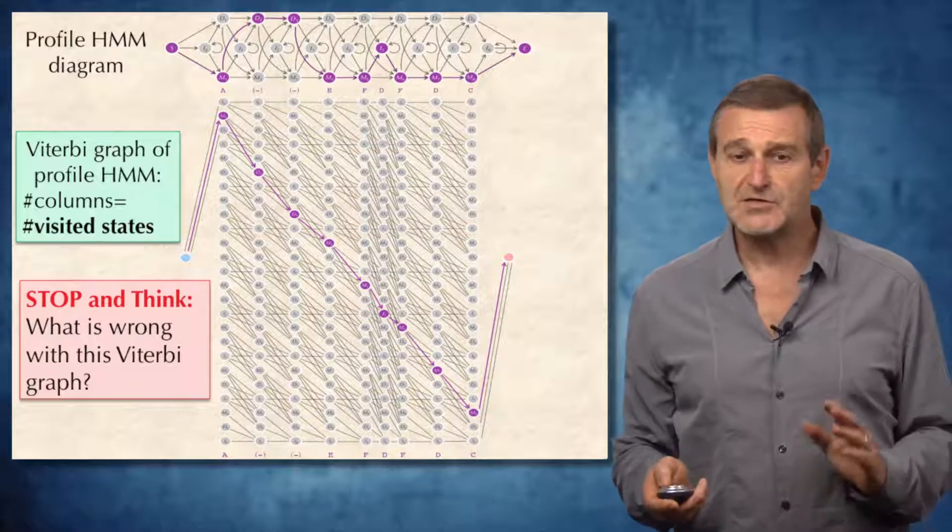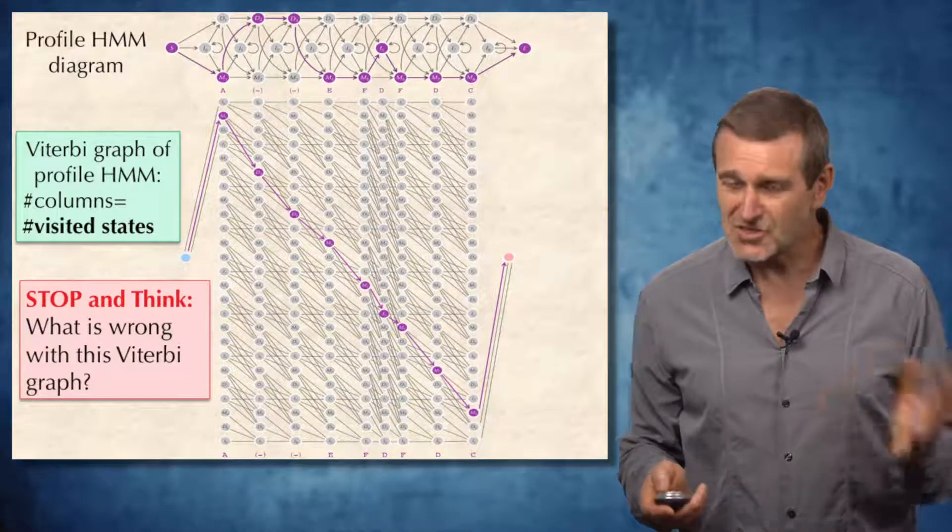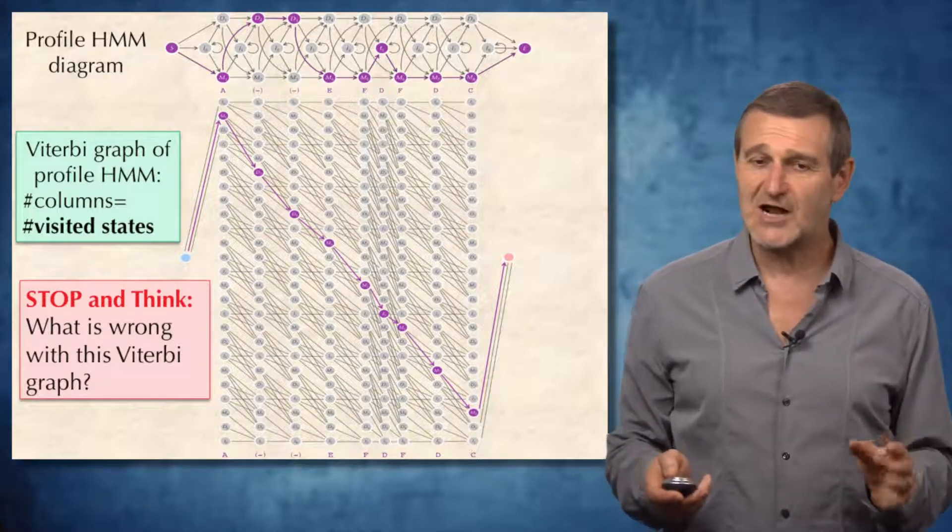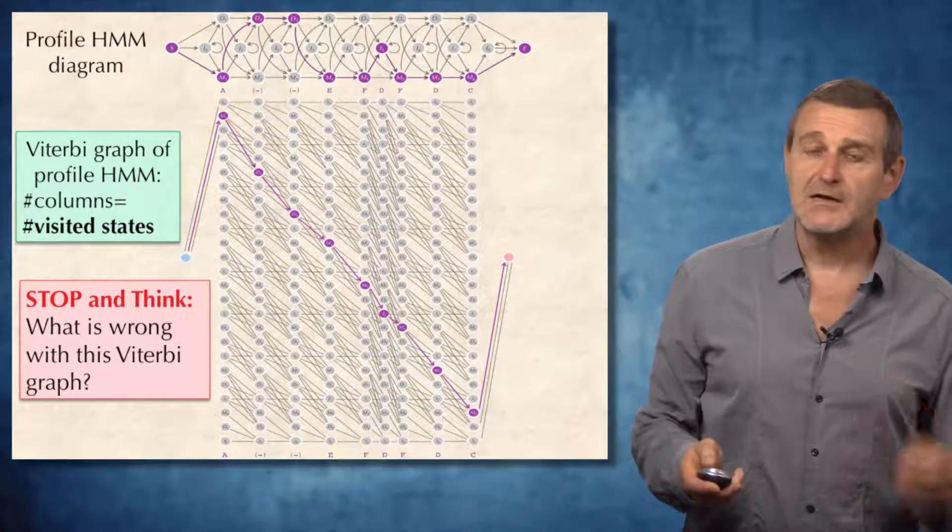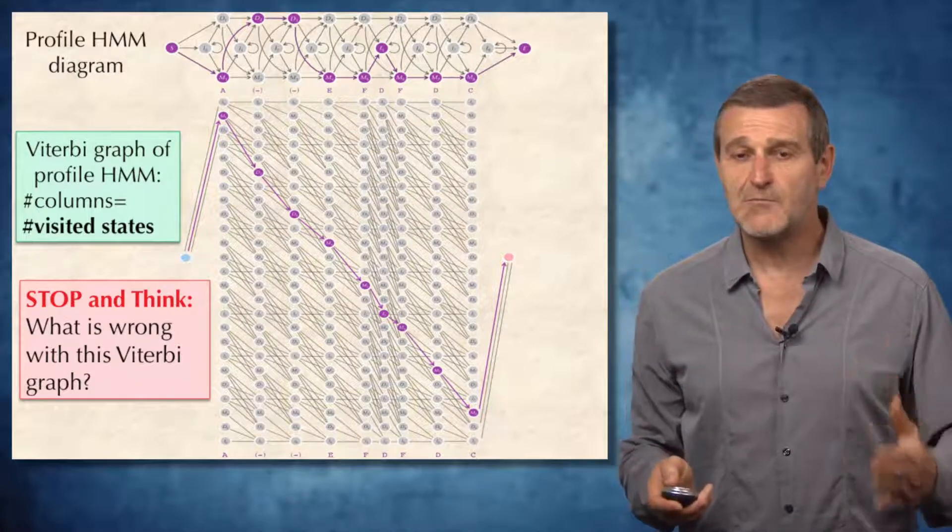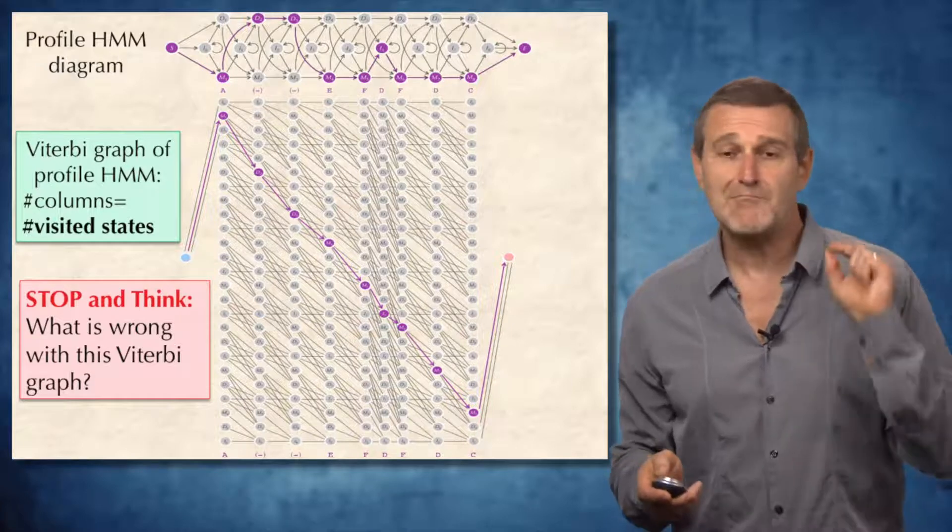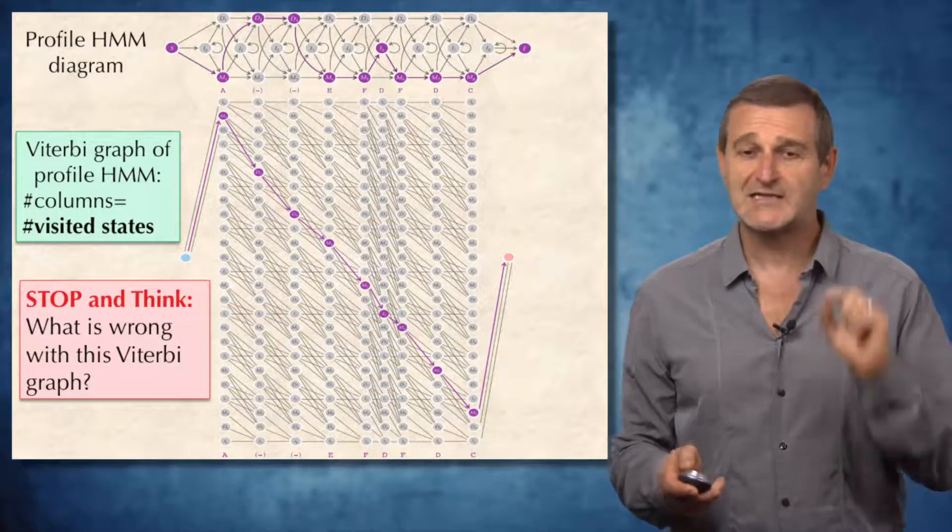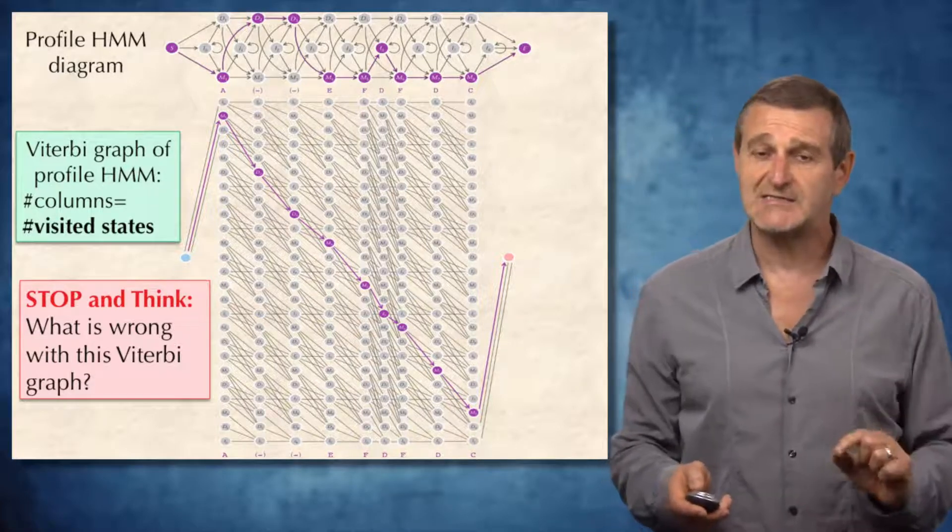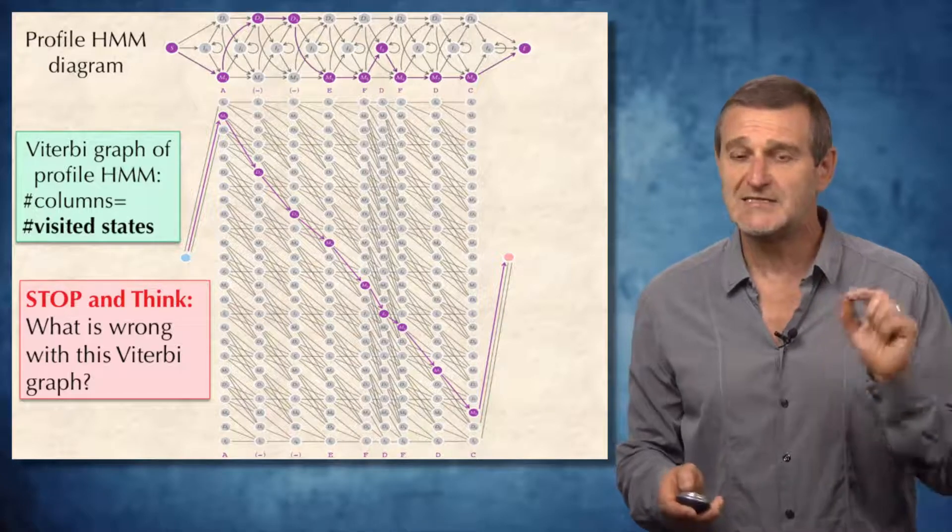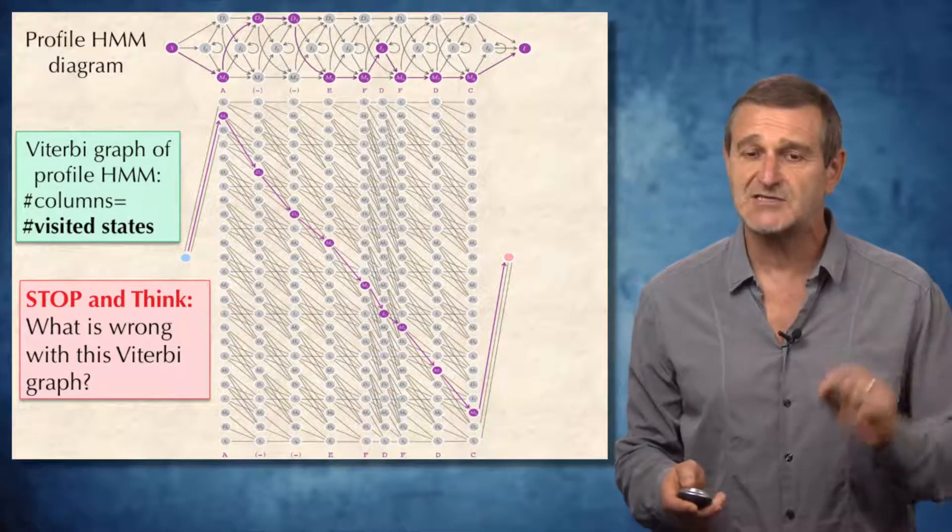And therefore, we should actually try to think about how to construct the Viterbi graph based on the number of columns, based on the number of emitted symbols. For example, something that we know rather than the number of visited states, something that we don't know in the case of silent states such as deletion states.